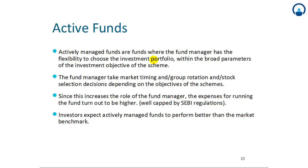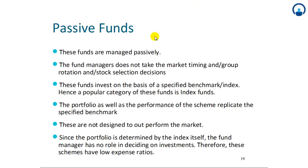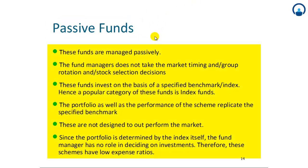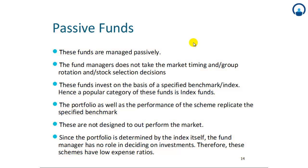Investors expect actively managed funds to perform better than the market benchmark. Passive funds, on the other hand, are managed passively — the fund manager does not take market timing, group rotation, or stock selection decisions. These funds invest on the basis of a specified benchmark index, just copying the index, hence the popular category is index funds. The portfolio as well as the performance of the scheme replicate the specified benchmark. These are not designed to outperform the market. Since the portfolio is determined by the index itself, the fund manager has no role in deciding investments. Therefore, these schemes have low expense ratios and are expected to perform as per the market, giving returns in line with — but not exceeding — the market.